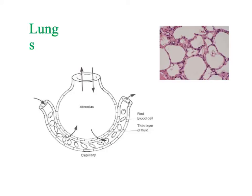Oxygen will diffuse from a high to low concentration across the thin alveoli wall and the thin capillary wall. That leads us into the last of the adaptations: there's a short diffusion distance. The one-cell-thick wall of the alveoli and the one-cell-thick wall of the capillary means you've got a very short diffusion distance. So the alveoli and the lungs exhibit all three features of a good exchange system.